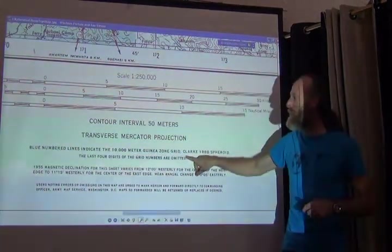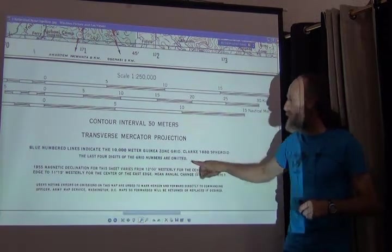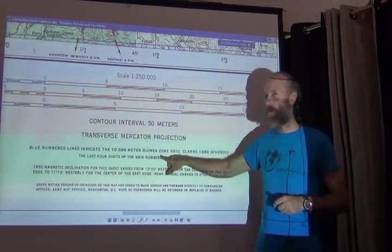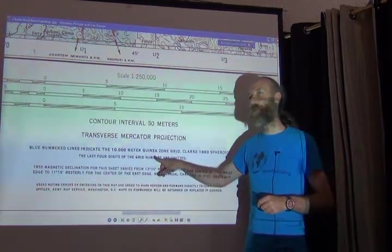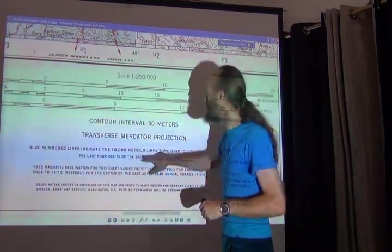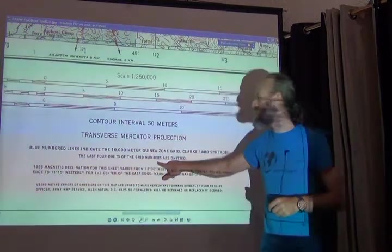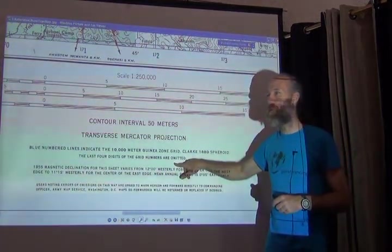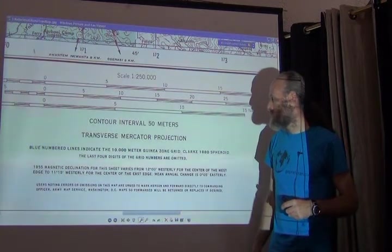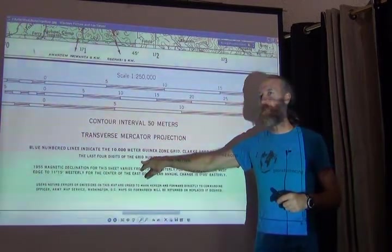The important information is in blue and in smaller font: the blue numbered lines indicate a 10,000-meter Guinea zone grid in a Clark 1880 ellipsoid. So this is a UTM zone that has a name — the Guinea zone. You have to figure out which one that is, and if you're in a different zone you need to adjust from this one to the other one. Below that it says the last four digits of the grid number are omitted, so it's giving only the kilometer part — actually the 10-kilometer part: four digits is 10,000 meters, or 10 kilometers.